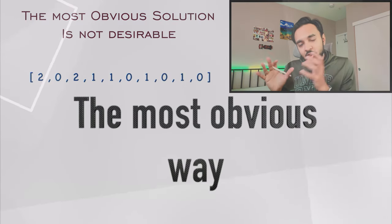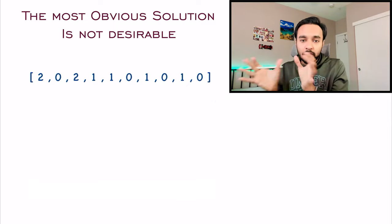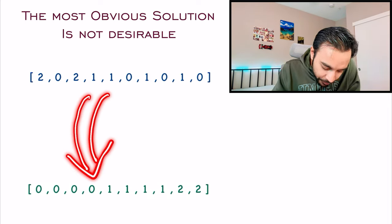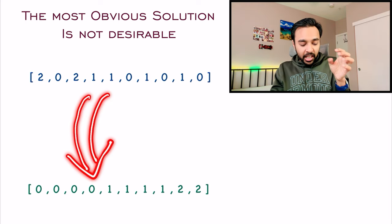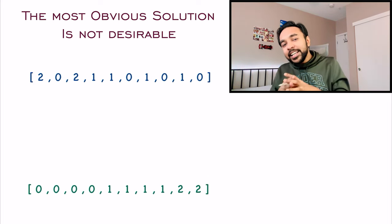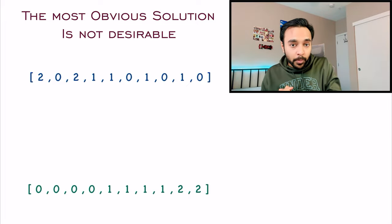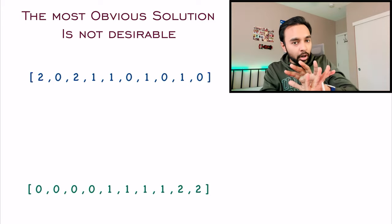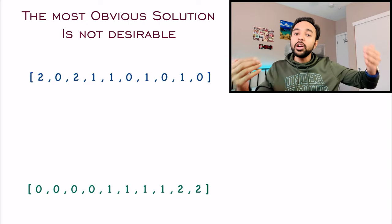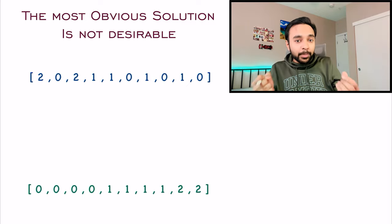Let us take a bigger array and try to generalize. I have this array and I need to group all the zeros, ones, and twos together. You can achieve this result by sorting the existing array — using quick sort, insertion sort, or any sorting technique. But this problem expects you not to use any of them. Also, you have to do it in place, meaning you must modify the actual array and not create a new one.